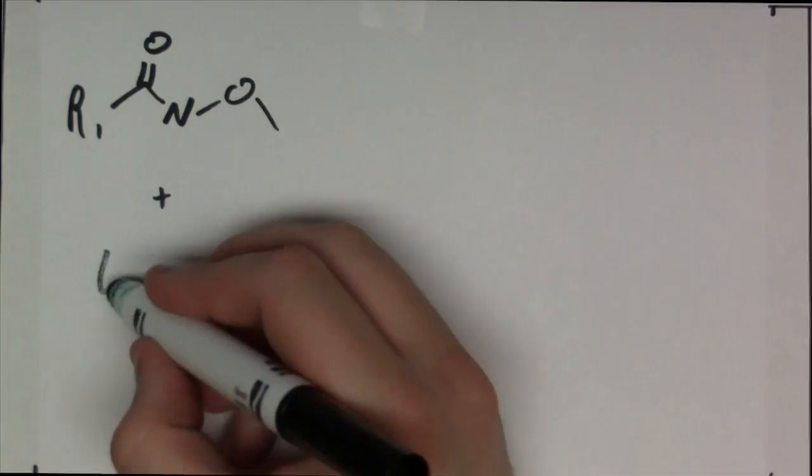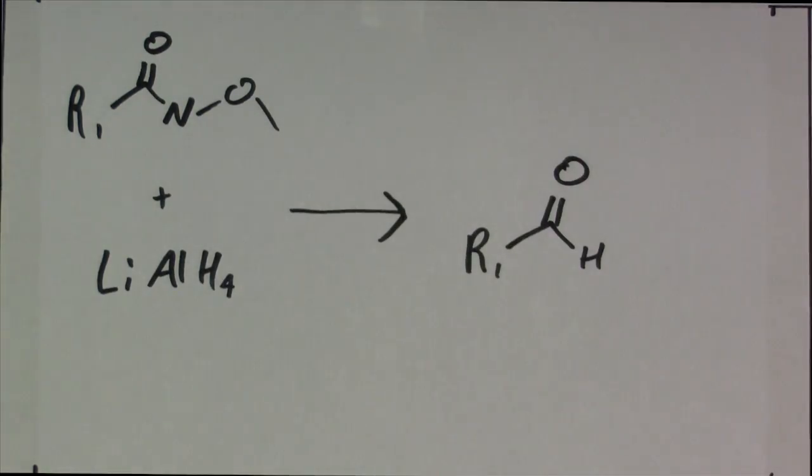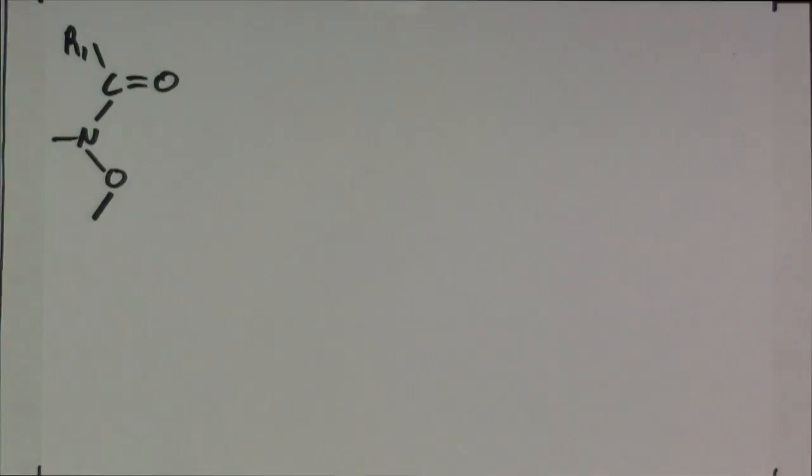The Weinreb amide can be treated with lithium aluminum hydride to give an aldehyde. But most importantly, it can be treated with traditional Grignard reagents generating a ketone.